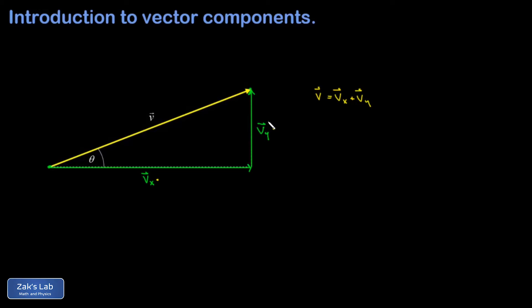One final stylistic note here is that typically we'll show that y component attached to the tail of the original vector. Remember that vectors are totally movable—they have length and direction but they don't have absolute position—so we can just move that vertical component vy and attach it to the tail of the original vector.